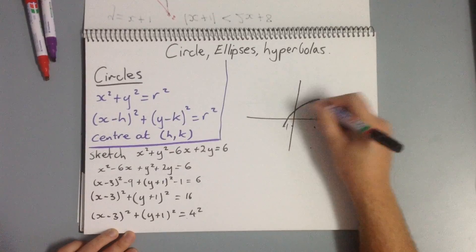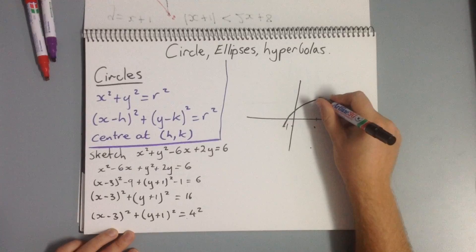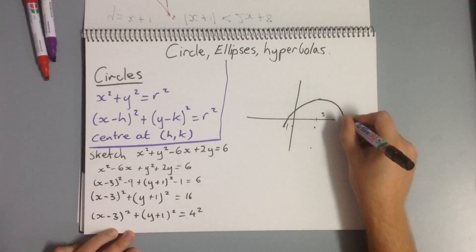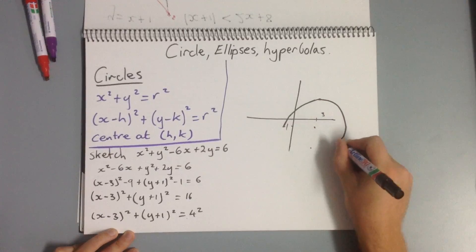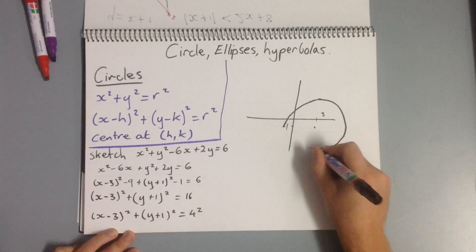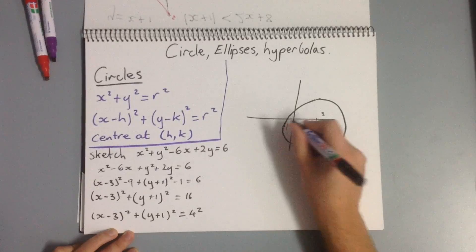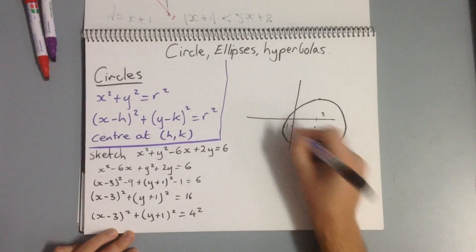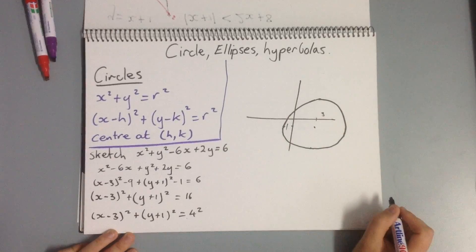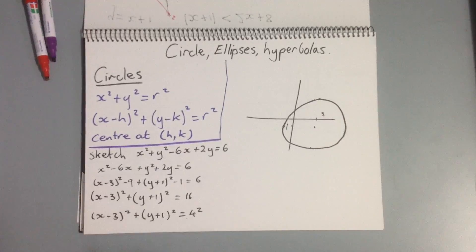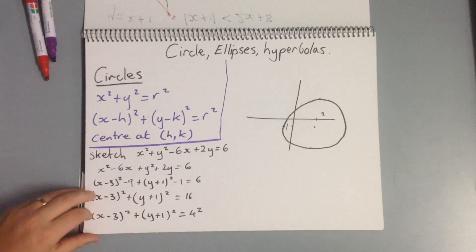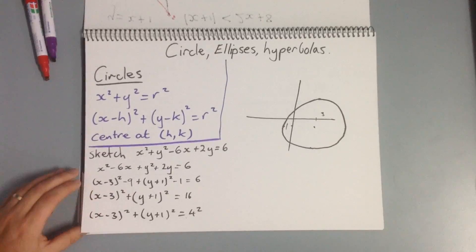Do the best you can with sketching circles — they can be a bit harder to get right. This is why it's a really good idea to do all your graphs in pencil, because as you can see, that's not a great circle, but if you've done it in pencil, you can fix it up a bit. So that's our circles.